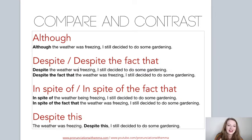A couple of others: therefore. 'The company is doing so well this month. Therefore, the staff should be rewarded with a Christmas bonus.' This goes in between the sentences — there must be a full stop and a comma around 'therefore.' Exactly the same with 'for this reason' and 'as a result': 'For this reason, the staff should be rewarded.' 'As a result, the staff should be rewarded.' They all work exactly the same way.